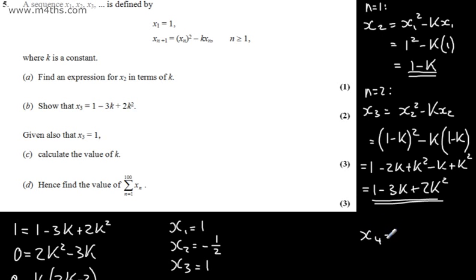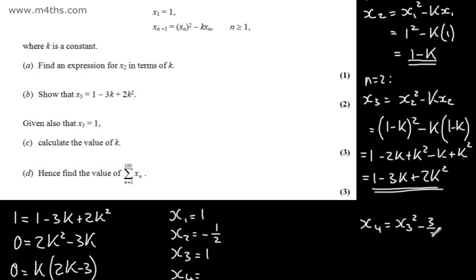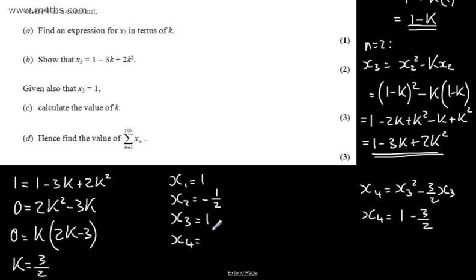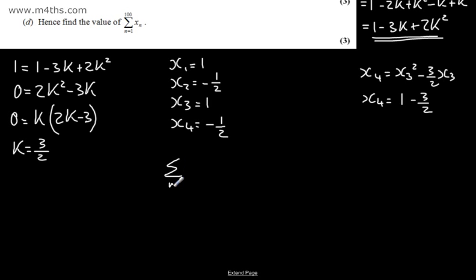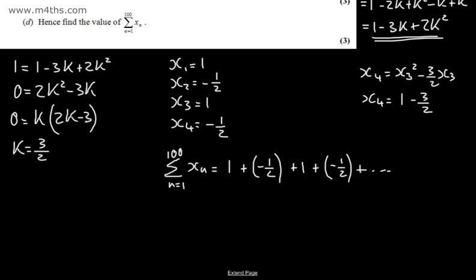For example, x₄ = x₃² − (3/2)·x₃ = 1 − (3/2)·1 = −1/2. This pattern continues, so the sum from n = 1 to 100 of x_n equals 1 + (−1/2) + 1 + (−1/2) + ⋯. We have 50 pairs of these.